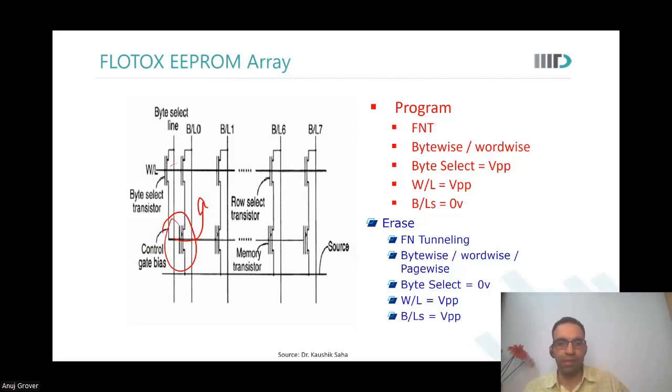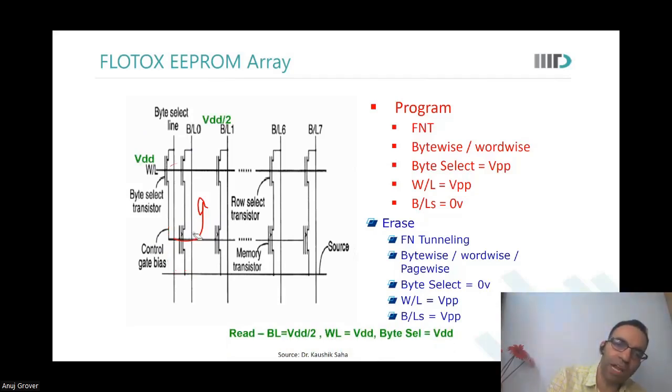During read, bit line can be at VDD by 2. Word line could be at VDD. So this is programmation where we say VPP - very high voltage - but during regular read operation, your stuff could be at VDD by 2, VDD and so on. It need not be at a very high voltage programmation voltage.